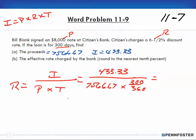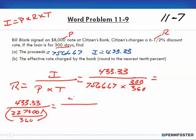So we have to do all of the math in the denominator. So we leave our numerator at $433.33, and we take the $7,566.67 times 300. We get $2,270,001, and that's over 360. And since we still have a fraction in the denominator, we continue to do the math there.